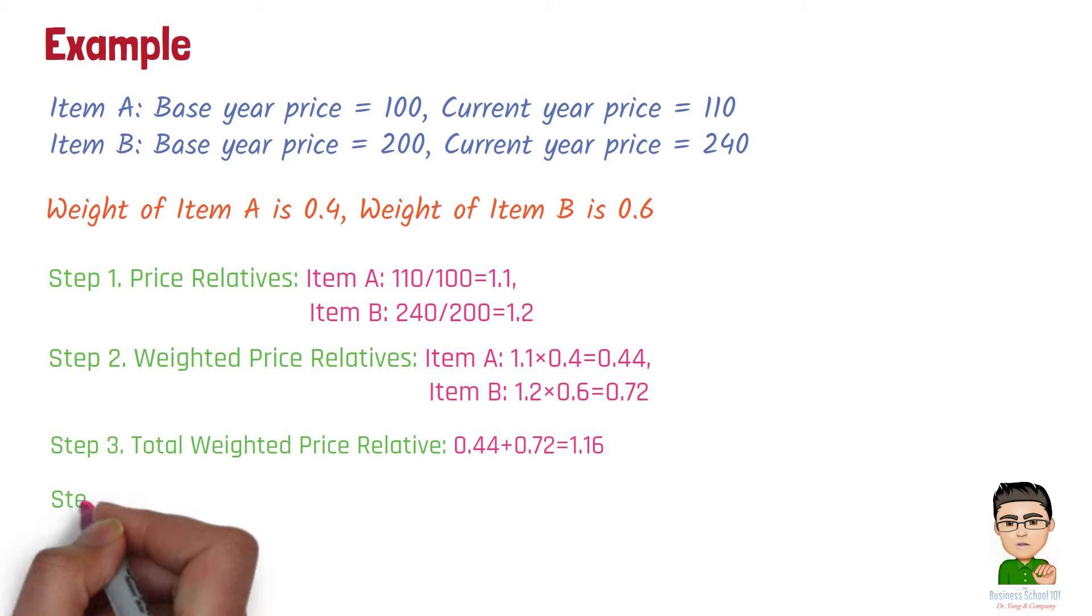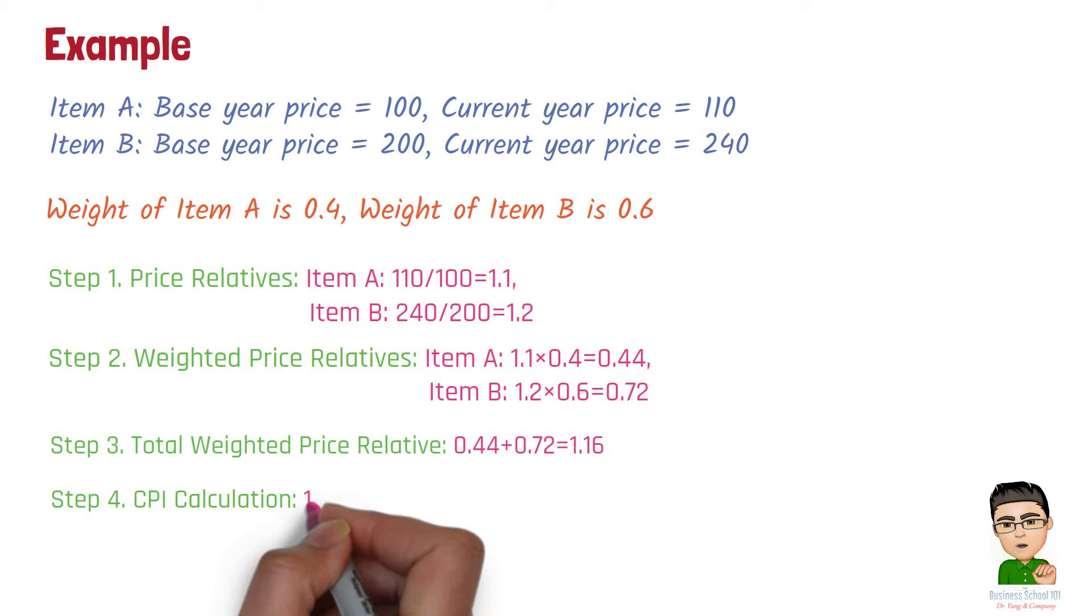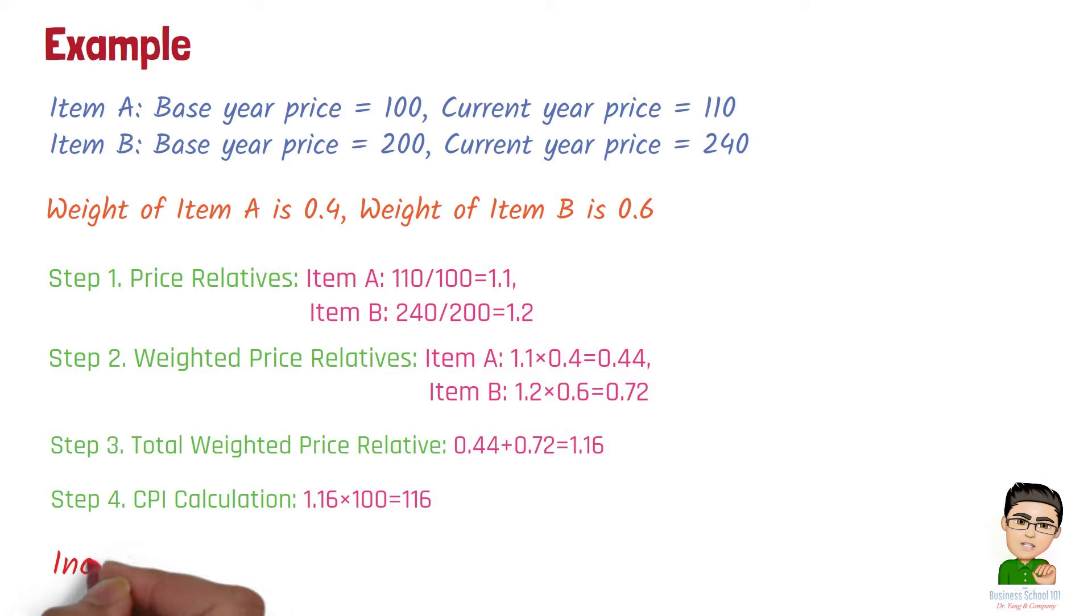Step 4. CPI calculation. Last, we use the total weighted price relative times 100. So, the CPI for the current year would be 116, indicating that the average price of the goods and services in the market basket has increased by 16% compared to the base year.